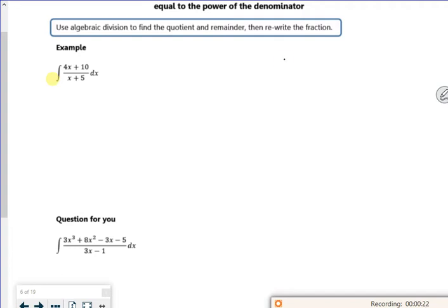And what I'm going to do is I'm going to do long division. So I've got 4x plus 10, and I'm dividing x plus 5 into it. Now I know a linear divided by a linear is going to be a constant, and I've got a remainder.